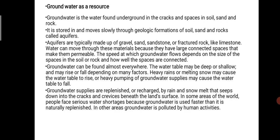There are different factors responsible for groundwater. The groundwater supply is replenished or recharged by rain, snowmelt, and seeps into cracks, crevices and beneath the land surface. In some areas of the world, people face serious water shortage because groundwater is used faster than it is naturally replenished. In other areas, groundwater is polluted by human activity.